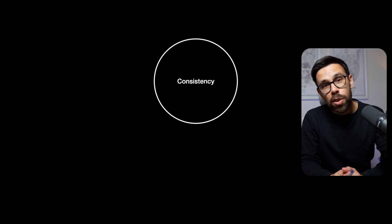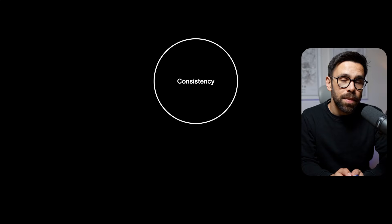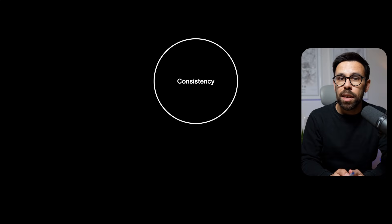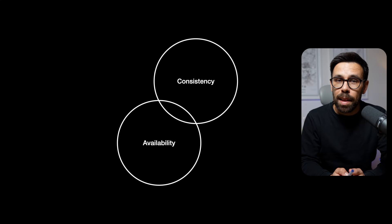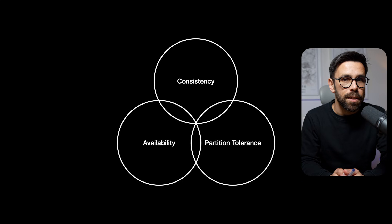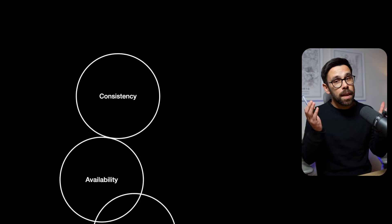Let's start with the boring academic part and then go back to what matters — a practical example that will make sense. So what does CAP theorem mean? C stands for consistency, A for availability, and P for partition tolerance. Let's go one by one.